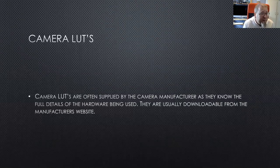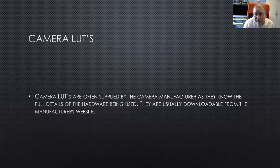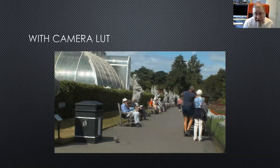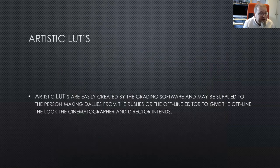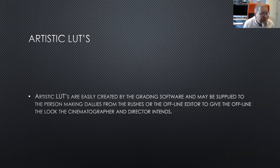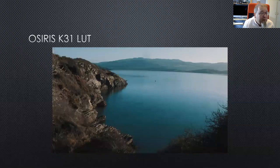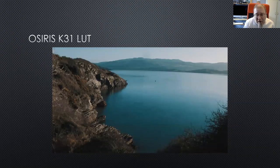Camera LUTs are supplied by the camera manufacturer, as they know the full details of the hardware. They're usually downloadable from the manufacturer's website — make sure you've got the right one for your camera. Applying the camera LUT to a flat log image gives you, as if by magic, a nice image that's already got a pretty good way towards a nice grade. Artistic LUTs are easily created by grading software and may be supplied to the person making dailies to give the offline the look the cinematographer intends. Here's an example applying the Osiris K31 — a blockbuster-style teal-and-orange look.